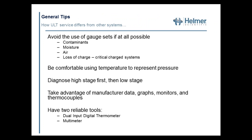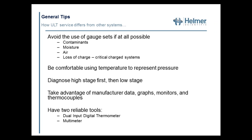The biggest tip we can provide is that the last thing you want to put on a ULT is a gauge set. Gauge sets are going to introduce contaminants, moisture, air, and most importantly, they're going to cause a loss of charge in the unit. These units have a very small refrigerant charge, especially in the low stage, and often contain a blended refrigerant. When you lose that charge, you have to evacuate and start all over again. So that is the last method of troubleshooting you want to use.